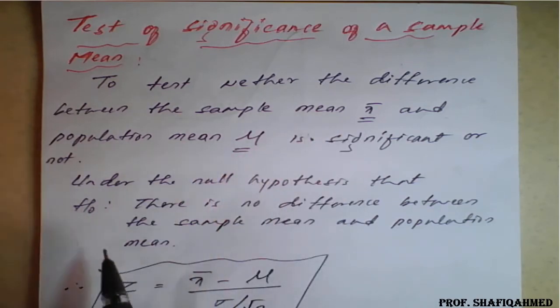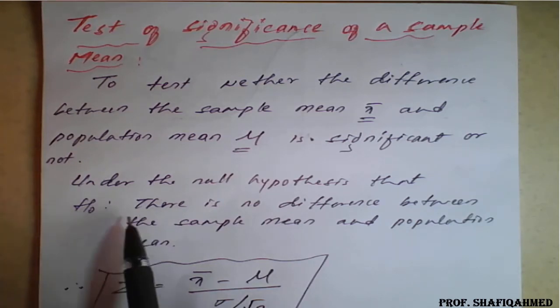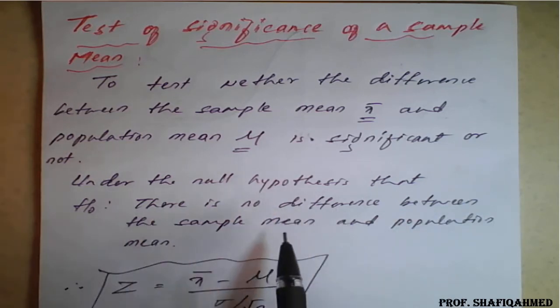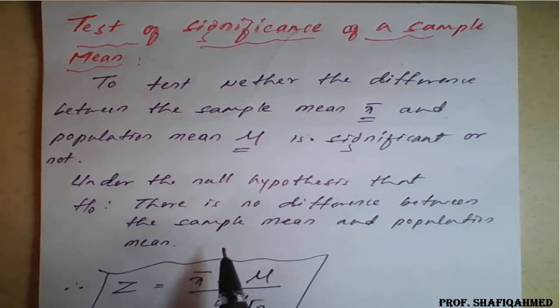For that we need to consider the null hypothesis as there is no difference between sample mean and population mean. We will consider this and whether this hypothesis is to be accepted or rejected based on the values we have taken for 5% and 1%.